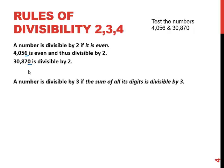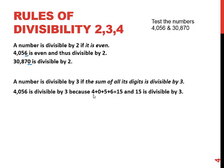The test for 3: a number is divisible by 3 if the sum of all its digits is divisible by 3. For example with 4,056, we are going to add up the digits 4 plus 0 plus 5 plus 6 and that will add up to 15. Now because those digits add up to 15, and because 15 is divisible by 3, that tells us that 4,056 is also divisible by 3.